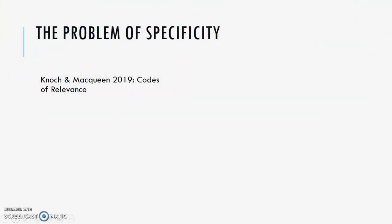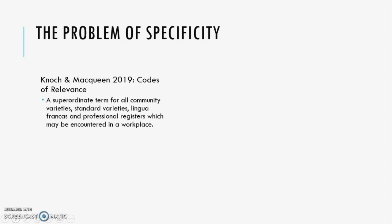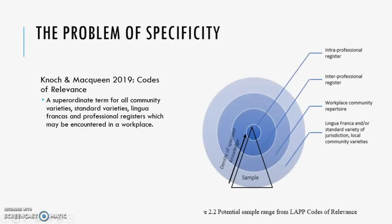Regarding the problem of specificity, Nock and McQueen in their new book on specific purpose language testing mentioned the concept of codes of relevance — a superordinate term for all community varieties, standard varieties, lingua francas, and professional registers which may be encountered in a workplace. They provide a diagram of concentric circles where the innermost circle is the intraprofessional register, the most specific register — for example, doctors talking to other doctors.